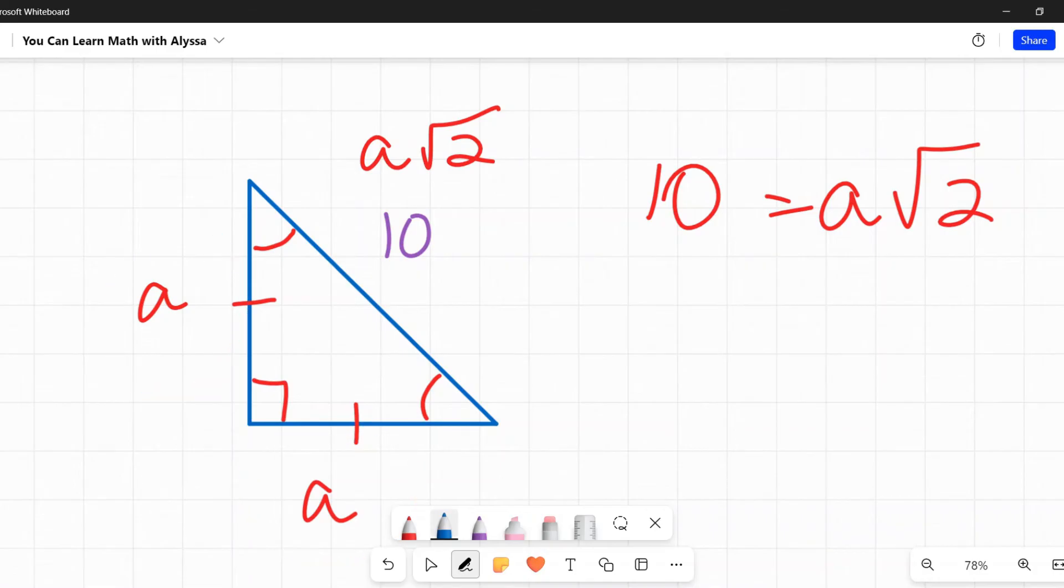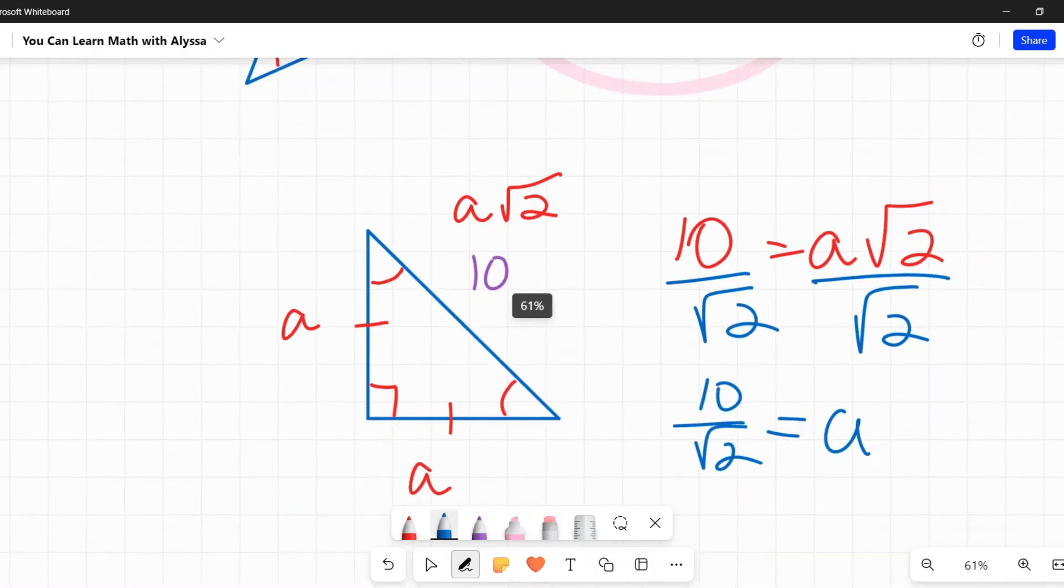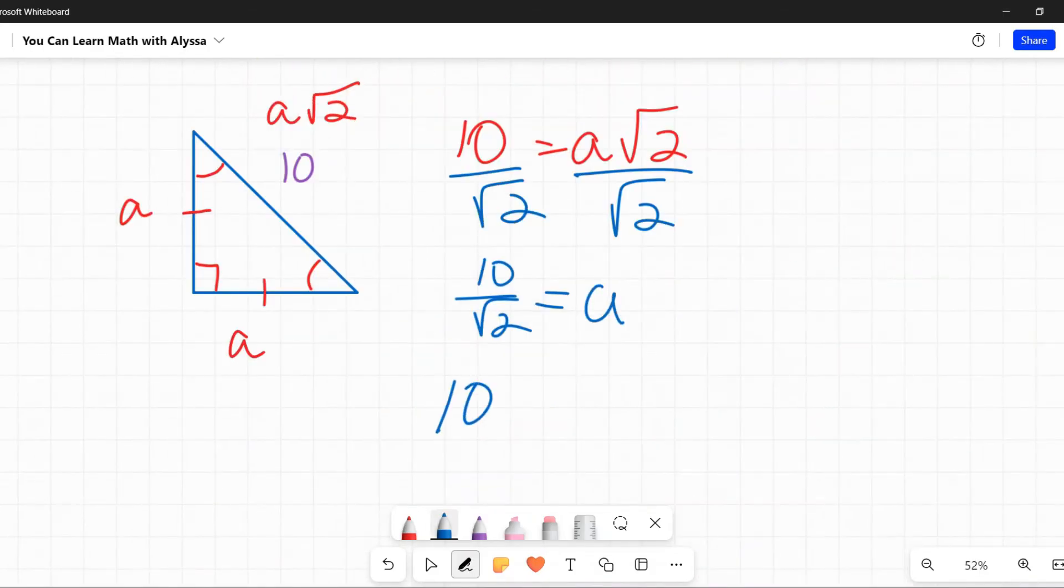To solve for a (which will give us our legs), we would need to divide both sides by the square root of two. We cannot leave a square root in the denominator, so we cannot leave it as 10/√2.